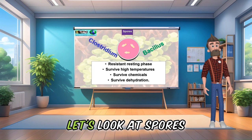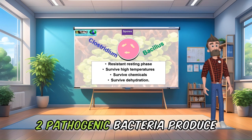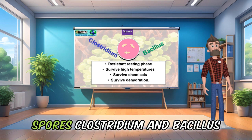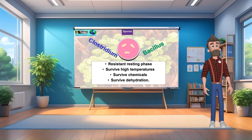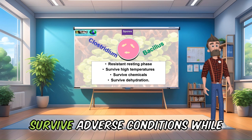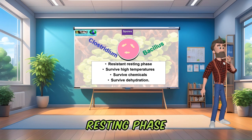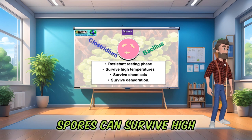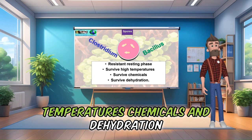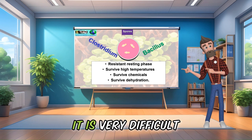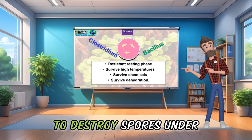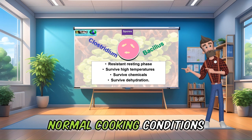Let's look at spores. Two pathogenic bacteria produce spores: Clostridium and Bacillus. These two bacterial species survive adverse conditions whilst other species would die. It is a resistant resting phase. Spores can survive high temperatures, chemicals, and dehydration. It is very difficult to destroy spores under normal cooking conditions.